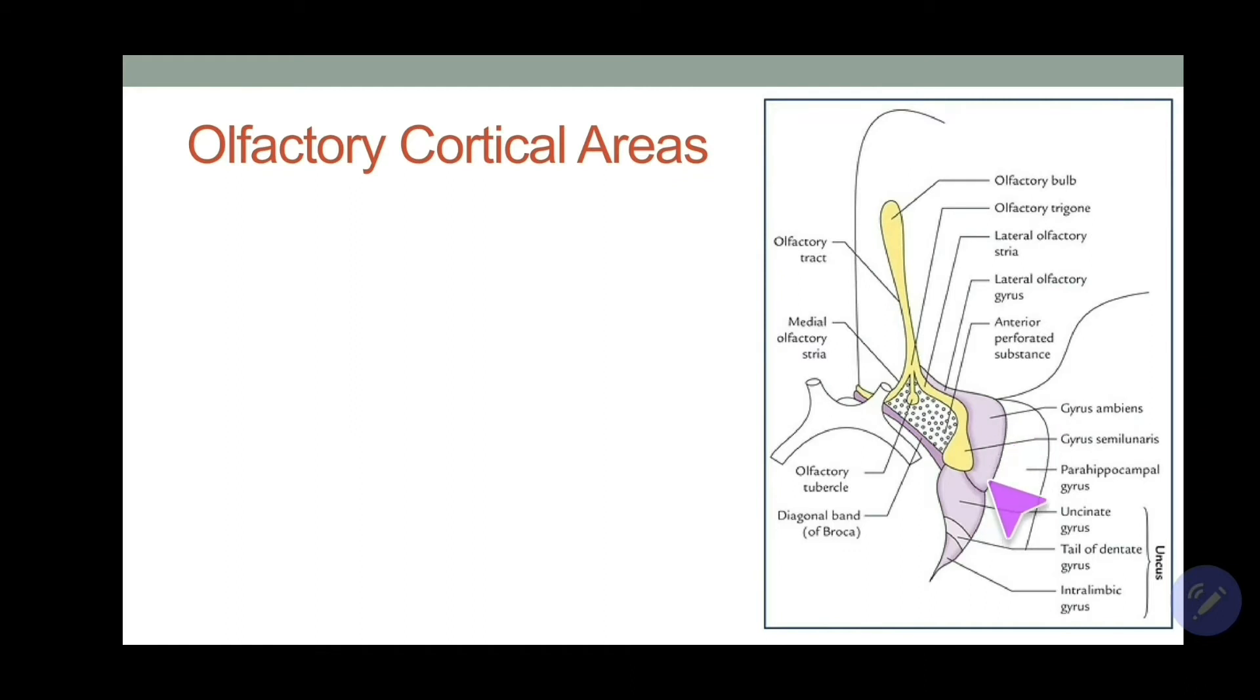Now look here, this as I told you is uncus. The subparts of uncus are the uncinate gyrus, then you have tail of dentate gyrus and intralimbic gyrus. These three gyri form the uncinate lobe, the secondary olfactory area. The primary olfactory area, as you can see, is the gyrus ambiens here, and this is the medial one.